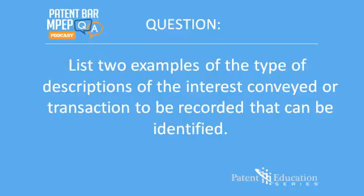Again, list two examples of the type of descriptions of the interest conveyed or transaction to be recorded that can be identified.